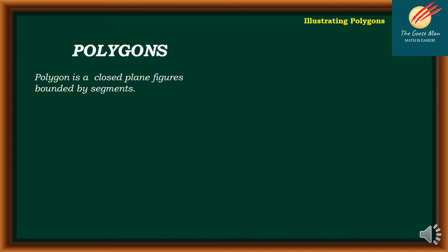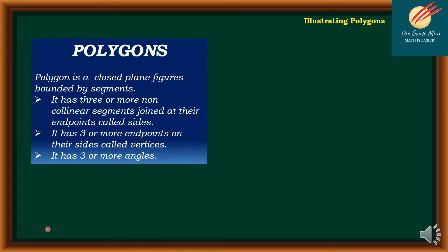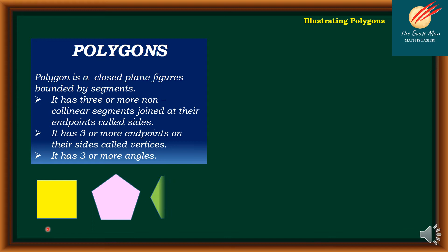To determine the difference between polygons, a polygon is a closed plane figure bounded by segments. It has three or more non-collinear segments joined at their endpoints called sides, while it has three or more endpoints on their sides called vertices, and three or more angles. Examples include quadrilateral, pentagon, and hexagon.